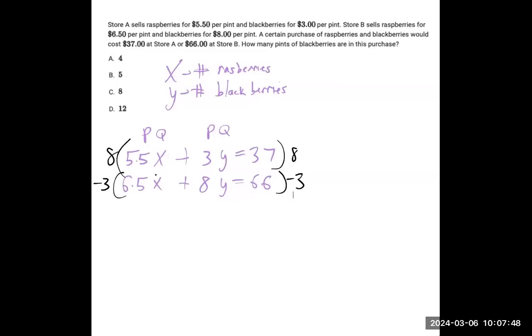We've got 8 times 5.5, which is 44. So, 44X plus 24Y equals 37 times 8, which is 296.